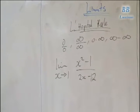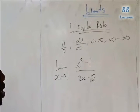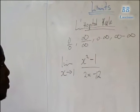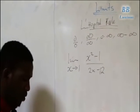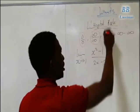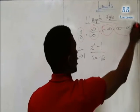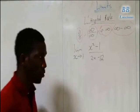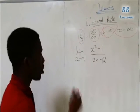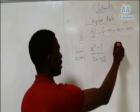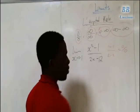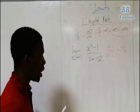In this video I will be explaining L'Hôpital's Rule under the limits topic. This rule is applicable when you have a limit that gives you an answer like 0 over 0, infinity over infinity, 0 multiplied by infinity, or infinity minus infinity. Now let me solve a basic example: if we substitute 1, this becomes 1 minus 1 over 2 minus 2, which is 0 over 0.